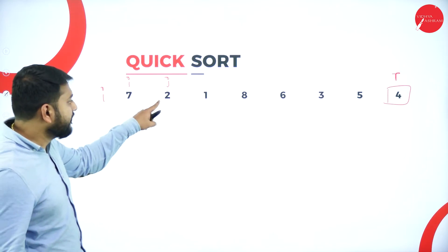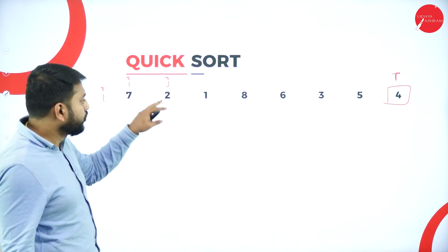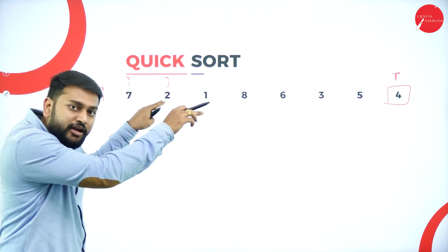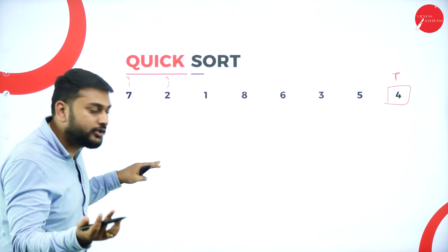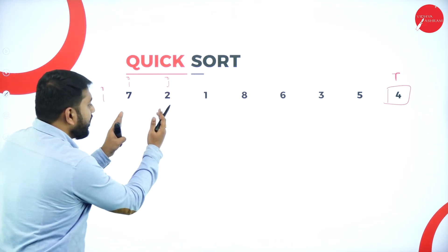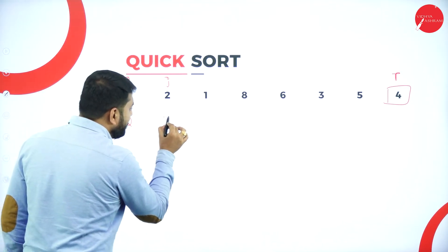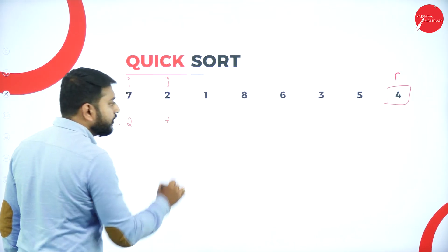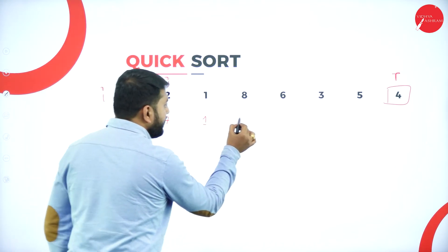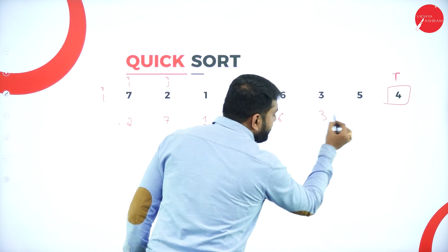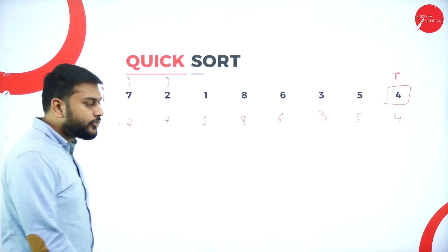I compare J with the last element (the pivot). J is two, which is less than four — yes, it is true. In that condition, I will swap these two numbers. So two will come to the left and seven will go to the right. That's what you need to remember — the array now looks updated accordingly.